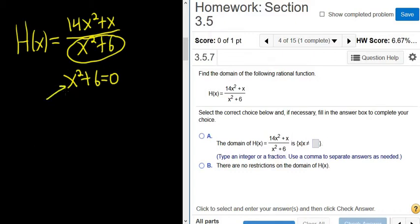x squared is always positive or 0. If you add 6 to it, it's always positive. So there's no way it's 0, so this equation has no real solution.